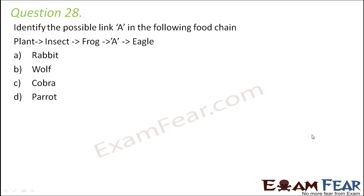Question number 28. Identify the possible link A in the following food chain: Plant → Insect → Frog → A → Eagle. So A has to be something which feeds on frogs and which can be eaten by the eagle. Looking at the options: Rabbit — the rabbit feeds on plants and won't feed on frogs. Wolf — wolf would not feed on frogs, and moreover wolf would not be eaten by the eagle. Cobra — a cobra is a snake and snake feeds on frogs. So Cobra is the correct option.